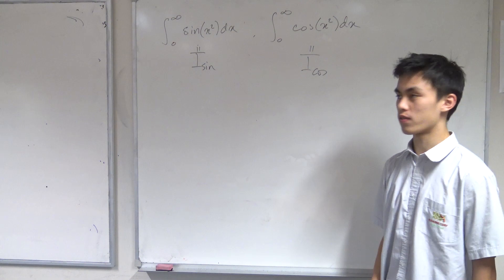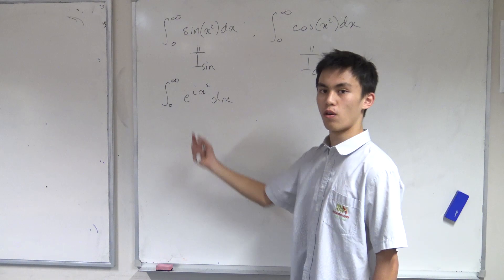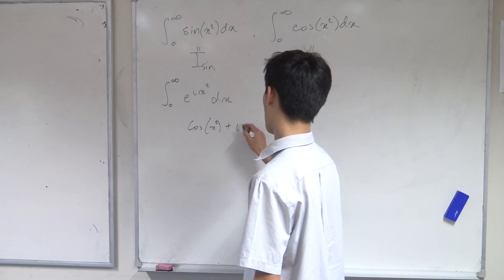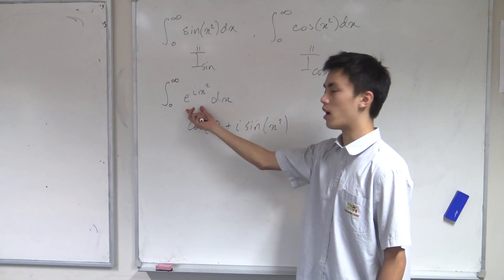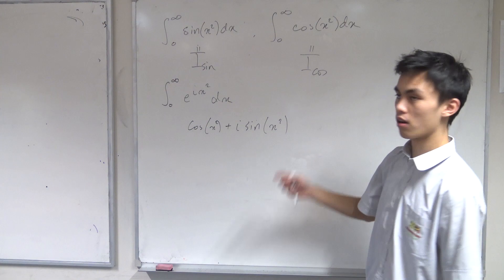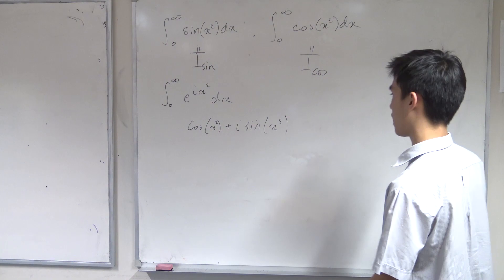Since we're using complex analysis, we want to combine those two together using Euler's formula. Consider the integral from zero to infinity of e to the ix squared dx. Using Euler's formula, you get the cosine of x squared plus i times the sine of x squared. Using the linear property of integrals, the real part gives I_cos and the imaginary part gives I_sine.